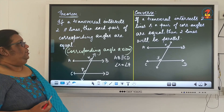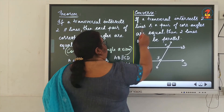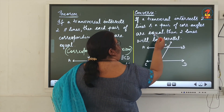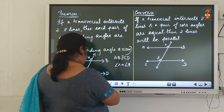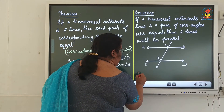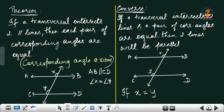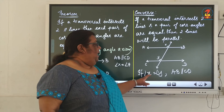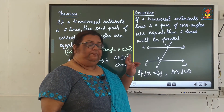We can learn the converse also. If a transversal intersects two lines such that the pair of corresponding angles are equal, then the two lines are parallel. In reverse, if angle X is equal to angle Y, then line AB will be parallel to CD. If two lines are parallel, corresponding angles are equal; if corresponding angles are equal, then the lines will be parallel.